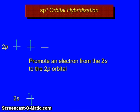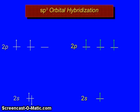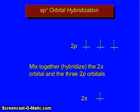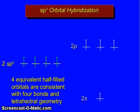These 2s electrons — promote an electron from the 2s to 2p orbital. Now 2s has 1 electron and 2p has 3 electrons. Mixed together, hybridize the 2s orbital and the three 2p orbitals. So 2sp³: 4 equivalent half-filled orbitals are consistent with 4 bonds and tetrahedral geometry.